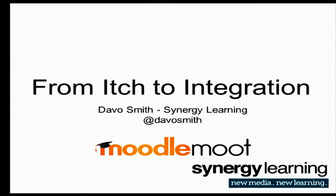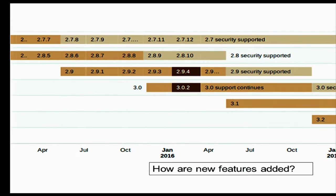Let's get a start. So, itch to integration. Hopefully you're all aware that about every six months a new version of Moodle comes out with lots of new features in it. We've certainly seen a lot of exciting new features coming in 3.1. But I suspect one or two of you will have wondered how do new features actually come from an itch that someone wants to scratch to a feature that you actually find in the latest version of Moodle.